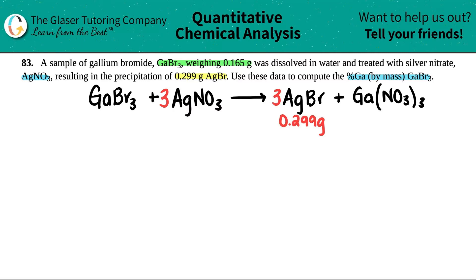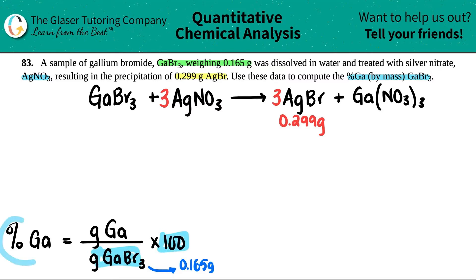Let's put what the percent formula is on the side here. The percent of any compound, in this case gallium, is always equal to the mass of that element - the grams of gallium - divided by the total mass of the compound, the grams of GaBr3. Since it's a percent, multiply by 100. They told us the GaBr3 is weighing 0.165 grams, so I know this bottom number.